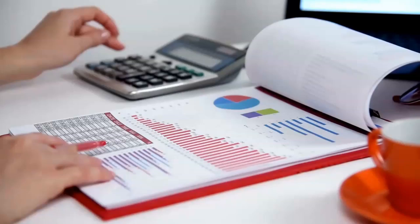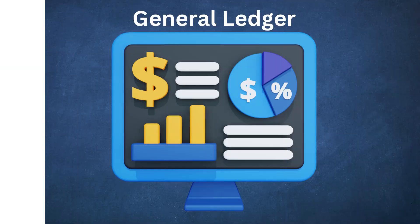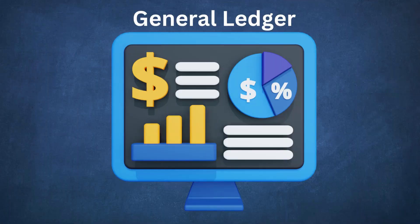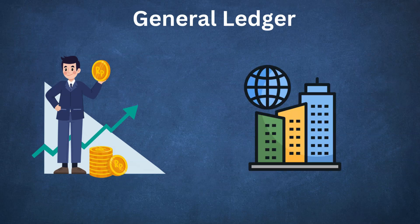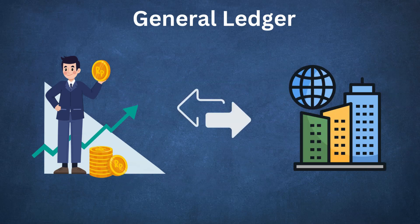Have you ever thought about how large companies keep track of their money? It's all thanks to the General Ledger, the backbone of any finance ERP application. In today's video, I'll break down the core functionality of General Ledger by comparing how we as individuals track our money to how big companies do it using the Oracle Fusion General Ledger application. So stick around — understanding the General Ledger is easier than you think.